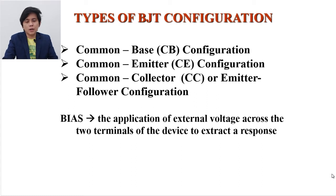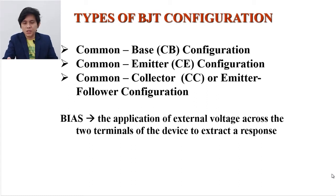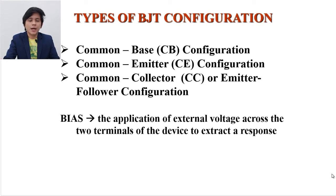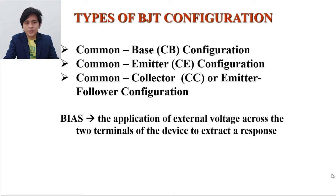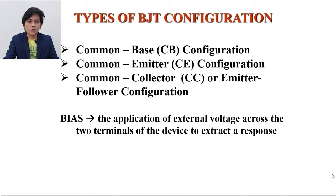The three most common types of BJT configuration are the common base, common emitter, and the common collector. Each of these configurations has its own characteristics, advantages and disadvantages, and that is the content of this video.